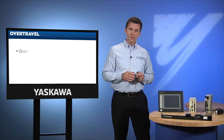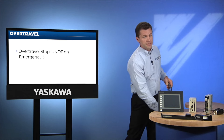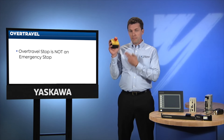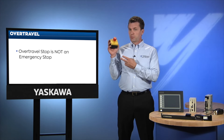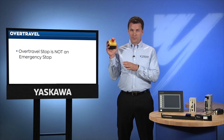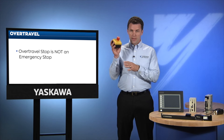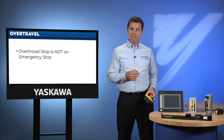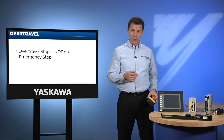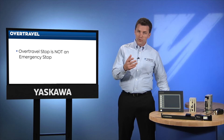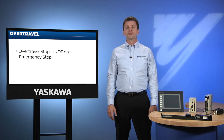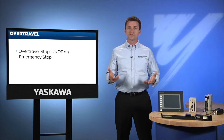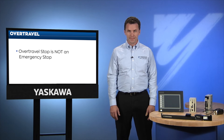It pays to remember that an over-travel stop is not an emergency stop. An emergency stop would prevent all motion in all directions. An over-travel stop is simply a quick way to stop motion in one direction. In an over-travel condition, the controller can be programmed to recover and the servo can still be moved in the opposite direction.